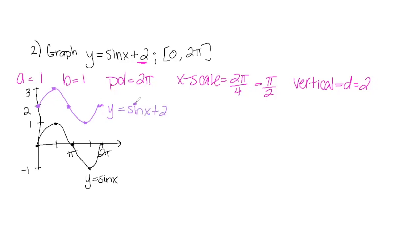Whenever you have a trig graph that you have to shift, always graph the sine or cosine function using just a, b, the period, and the x-scale first — that gives you your basic parent function. Then use the c or d values to move the graph up, down, left, or right depending on what's going on. In the next example we're going to do a phase shift, moving left or right rather than up and down.